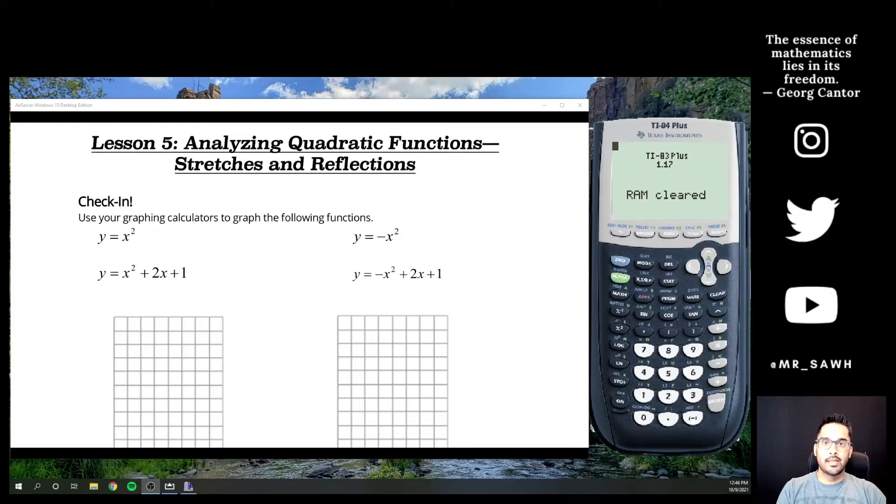Alright everybody, welcome back. This is lesson 5 of our quadratic series for Math 20-1. You'll find all the links just like usual in the description so you can get a blank copy and the solutions if you just want to try some things. Let's get into it. We'll talk about stretches and reflections in this one. Last time we talked about translation, so either moving left, right, or up, down around our plane.